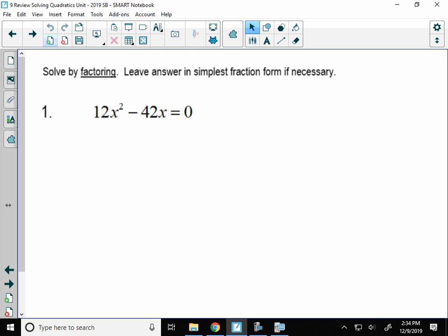All right, so my question is 12x squared minus 42x equals 0. There's two terms, so my options are to decide if there's a greatest common factor or difference of squares.